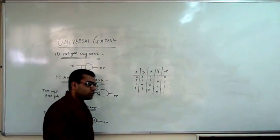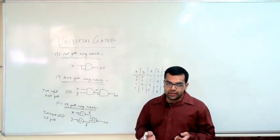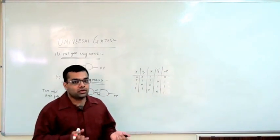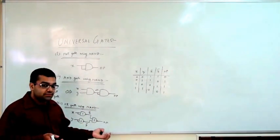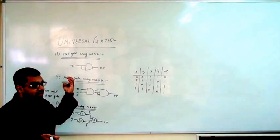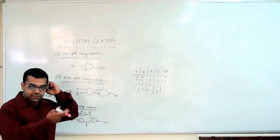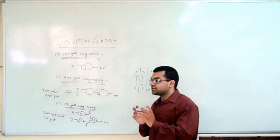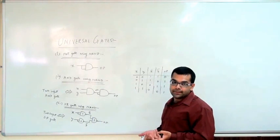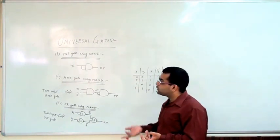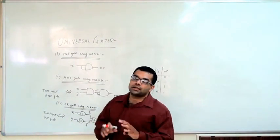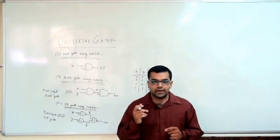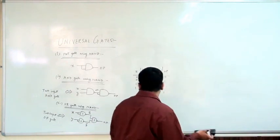So we have been able to construct all three basic gates — AND, OR, and NOT. Any circuit is constructed using only these three gates. So if you can construct OR, AND, and NOT using NAND, you can draw any circuit using NAND gates only. That is why it is called the universal gate. Let us see the NOR treatment also.